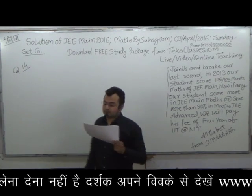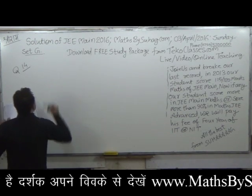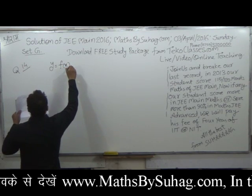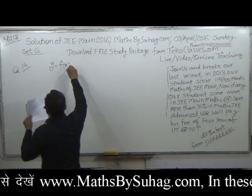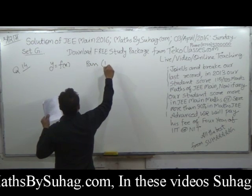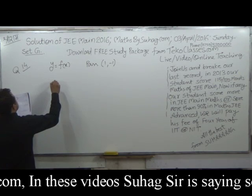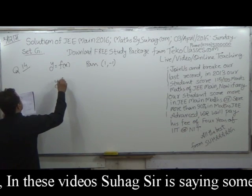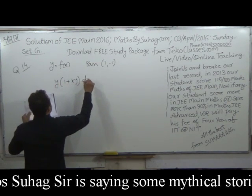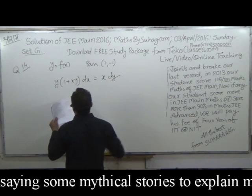Question number 14. If the curve y = f(x) is passing through the point (1, -1) and satisfies the differential equation (1 + xy) dx = x dy.